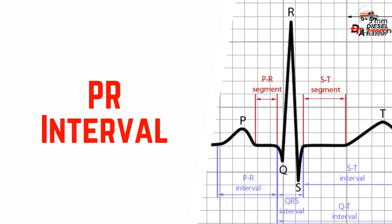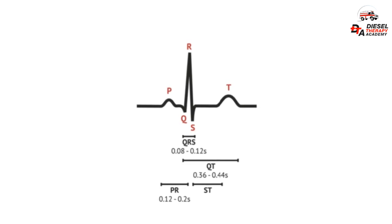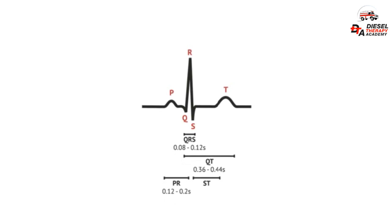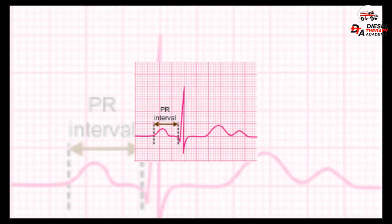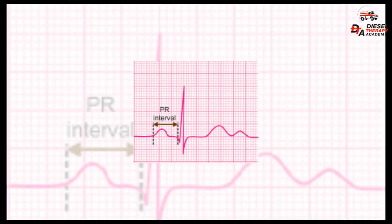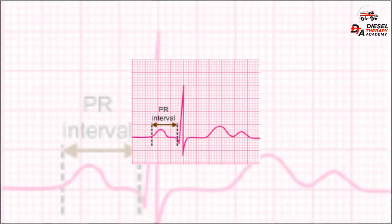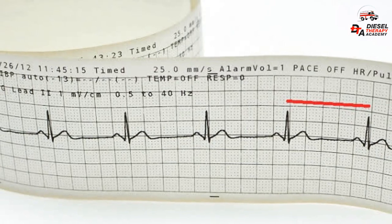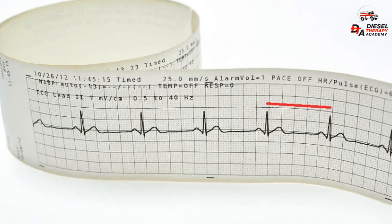The PR interval is between the P-wave and the beginning of the QRS segment — ventricular depolarization. The average PR interval is 0.12 to 0.20 seconds, or three to five small boxes on the ECG graph paper. A prolonged PR interval suggests a delay in getting through the atrioventricular node, the electrical relay system between the upper and lower chambers of the heart.